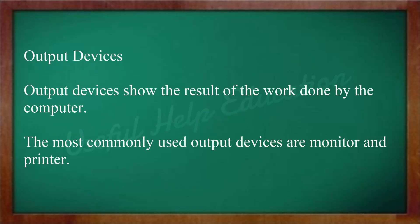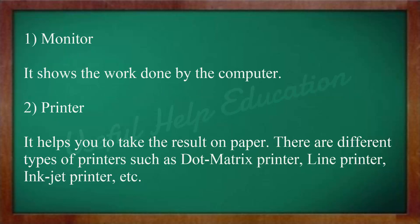Output devices show the result of the work done by the computer. The most commonly used output devices are monitor and printer. The monitor shows the work done by the computer. The printer helps you take the result on paper. There are different types of printers such as dot matrix printer, line printer, inkjet printer, etc.